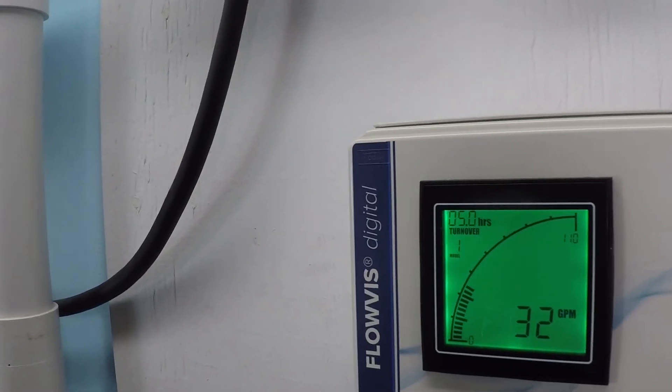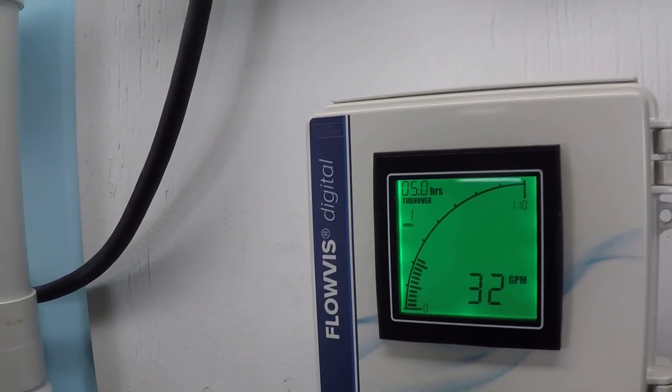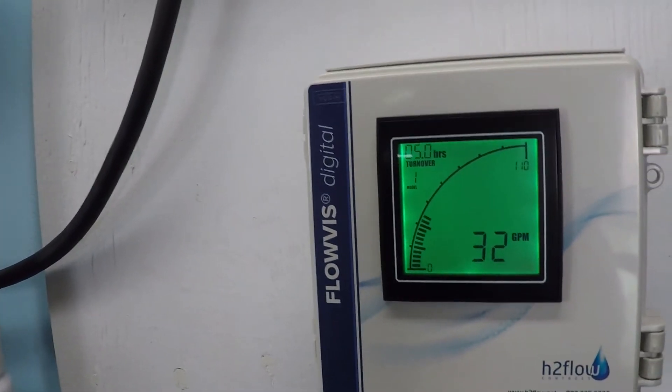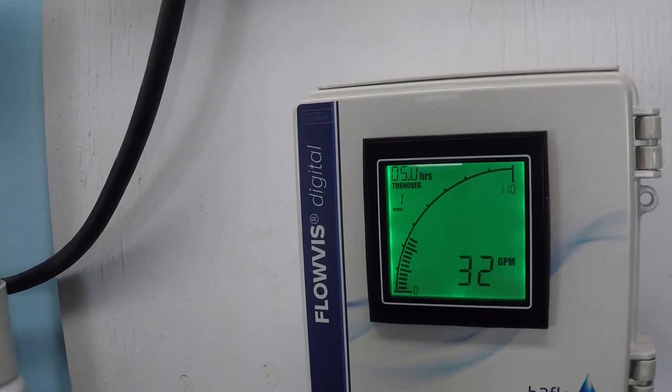If you had a 20,000 gallon pool, you should be filtering 60,000 gallons per day. Are you? You're not going to know unless you have a flow meter and you're able to monitor flow rates, and the best way to do that moving forward is with a digital flow meter.